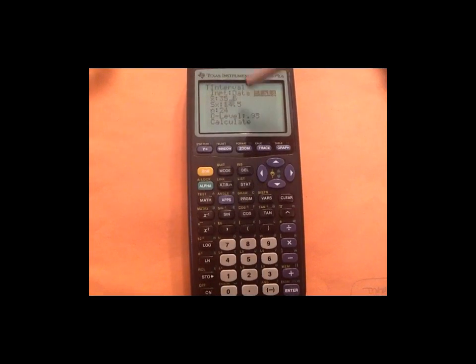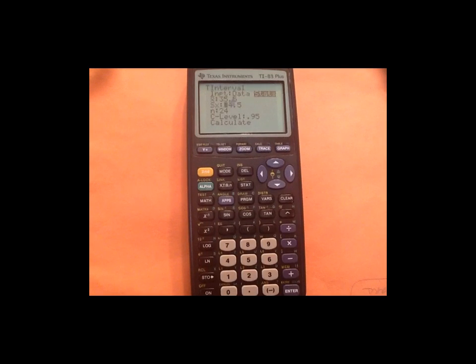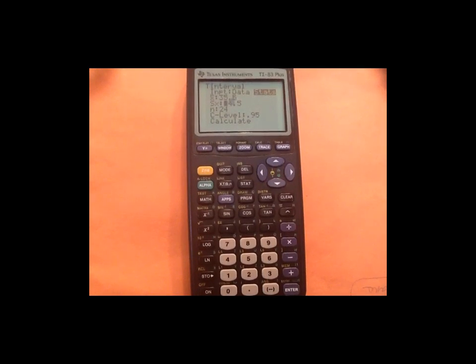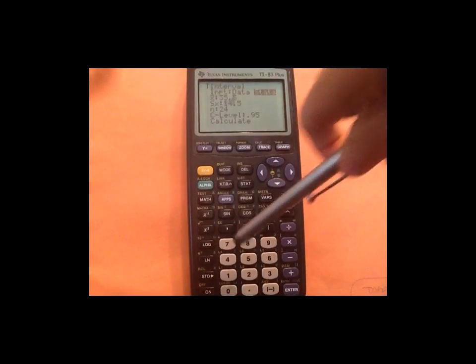SX is sample standard deviation. If you're doing Z interval, it will have that population standard deviation symbol, that little O looking thing, but they both mean standard deviation.